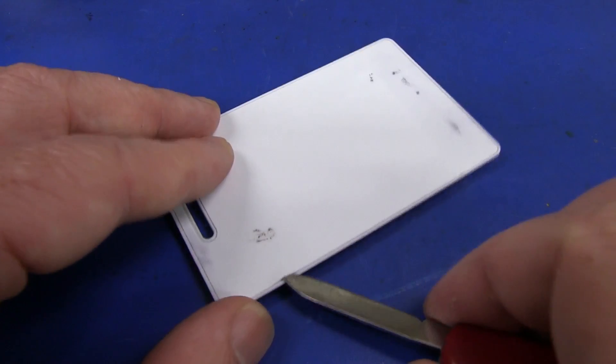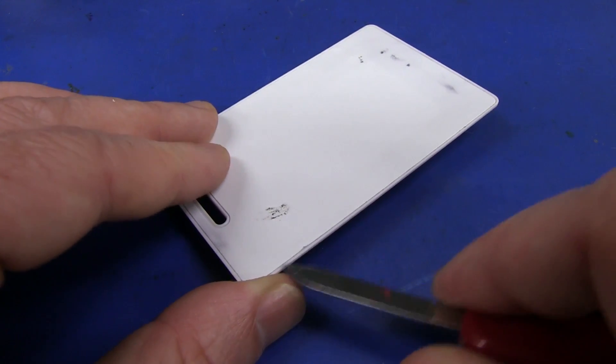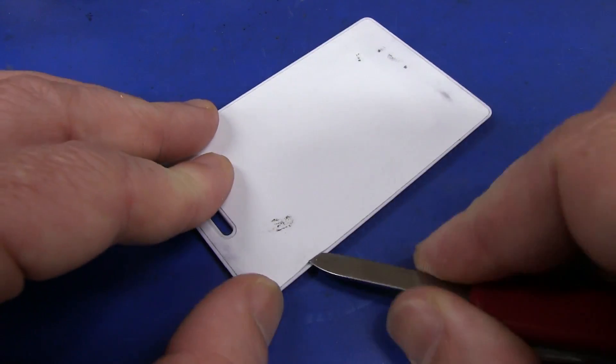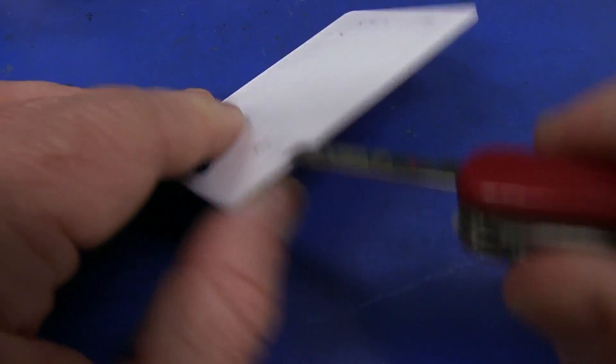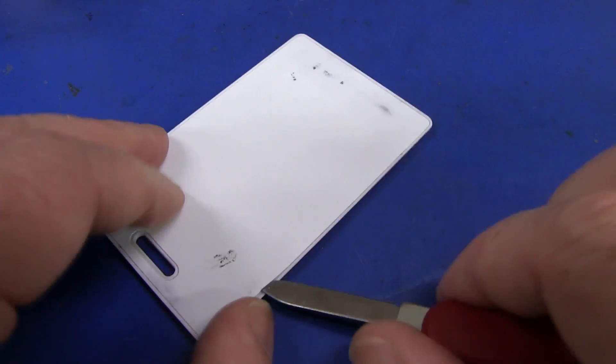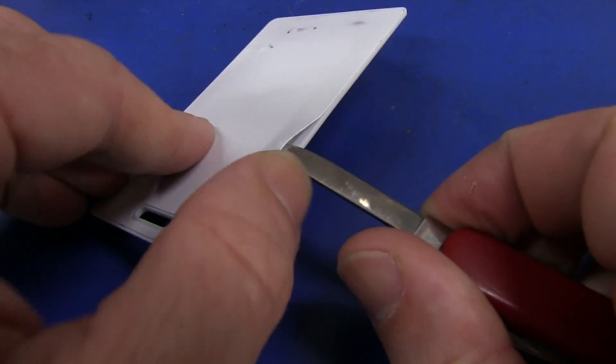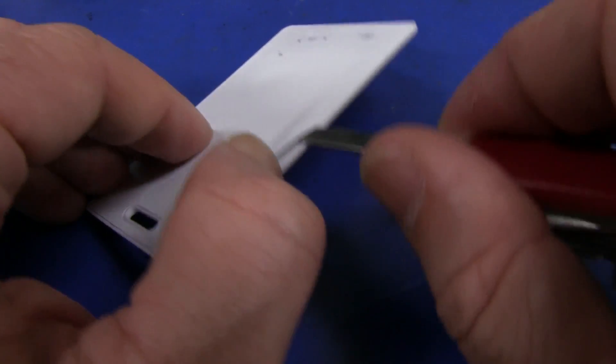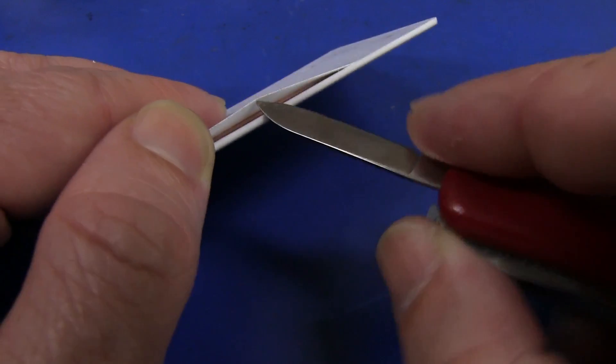You should just be able to - oh yeah, there we go - should just be a cover. Hopefully it's not potted on the inside, but hopefully we should usually be able to just peel these things off and access the coil.